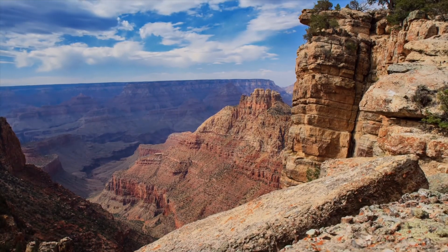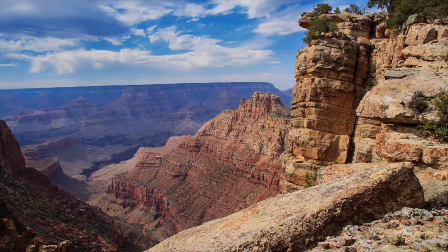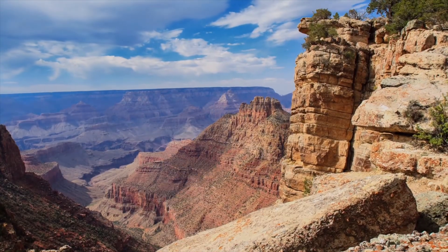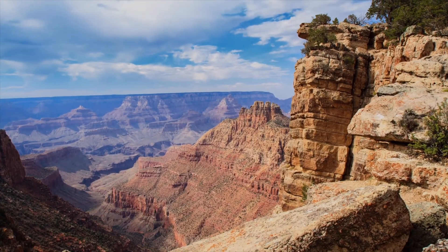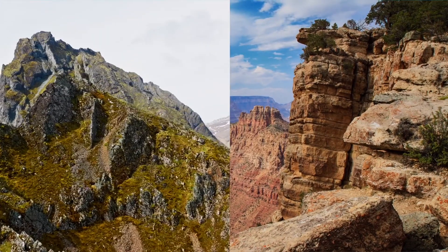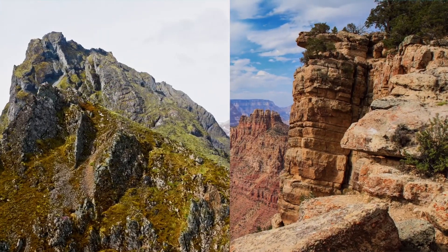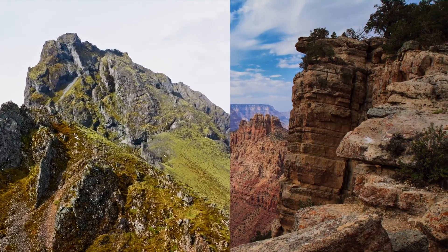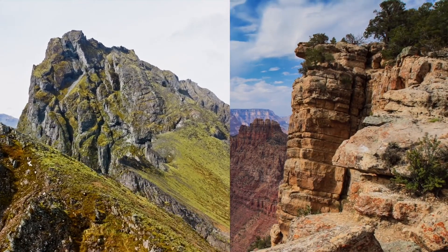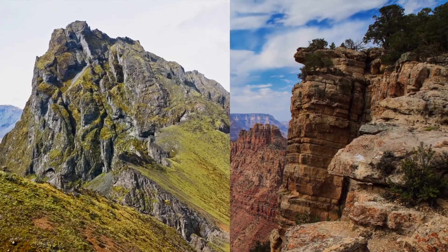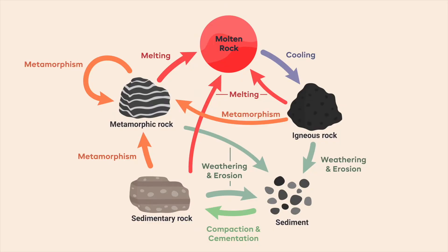Now let's think back to the deep canyon and rocky mountain peaks from the beginning of our journey today. Those layered canyon walls might have been made of sandstone, while the mountain peaks were made of gneiss and granite. Although these features of our planet's surface might seem huge and unchanging, they're all just snapshots of different stages in the never-ending rock cycle. The rock cycle is just one piece of the interconnected processes that are constantly reshaping our planet's surface, and every rock around us is a reminder that our planet is constantly changing.